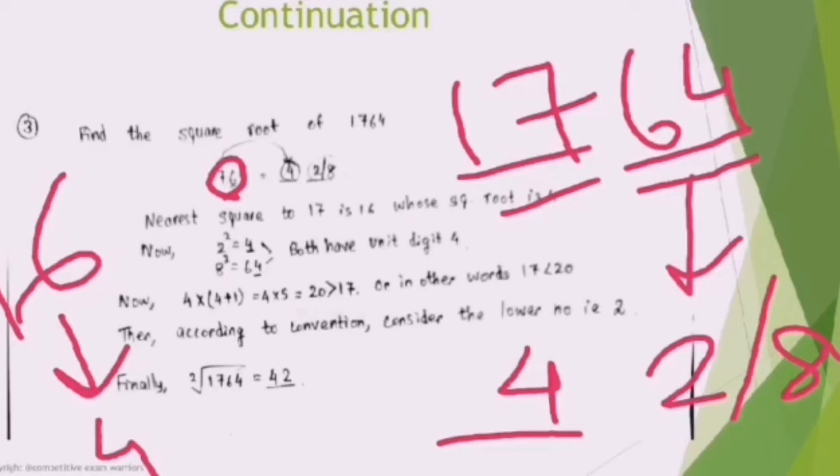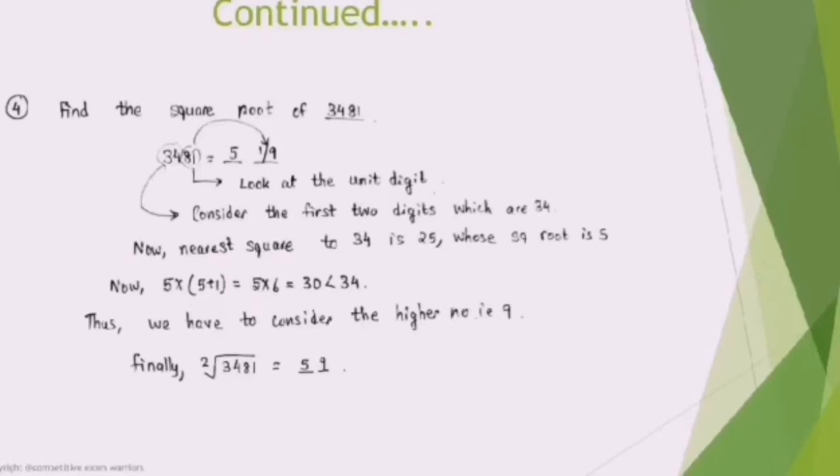The square root of 1764 is 42. Since we are getting 20, which is greater than 17, we need to take the lower number. If the figure would have come out to be less than 17, then we would take the higher number, but here the opposite has occurred.